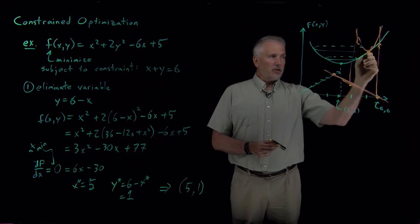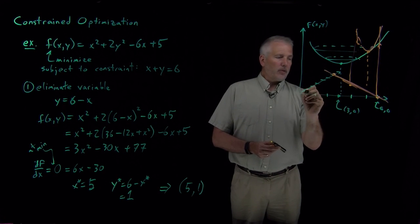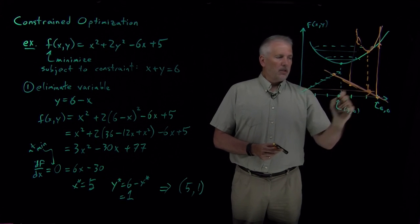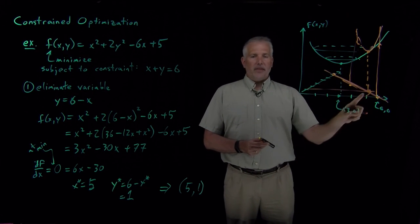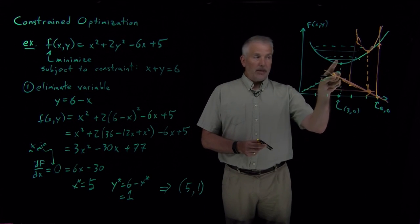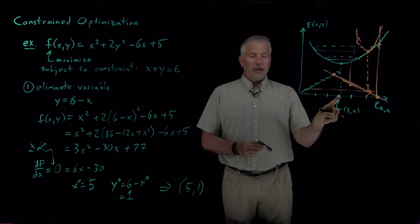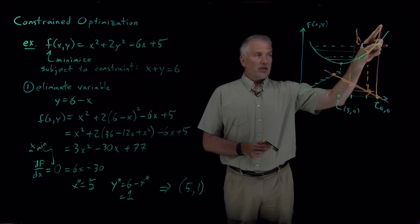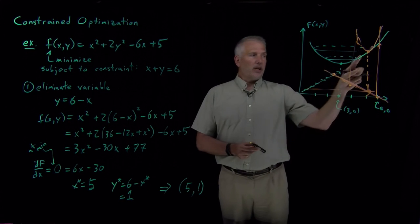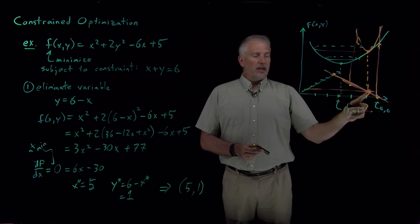So the minimum of the constrained function is here, and if I were to trace that point down, that point is what exists at 5, 1. So the minimum of the absolute function without any constraints may be 3, 0, but we're only interested in a subset of the points of that function, the ones that obey some constraint, and their minimum may be somewhere else entirely.